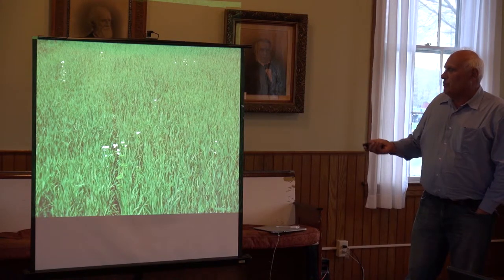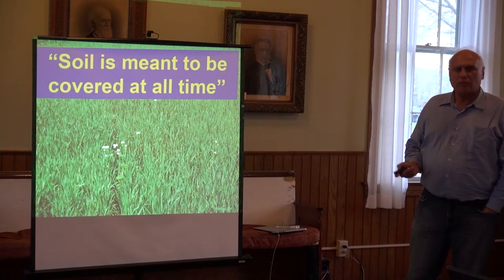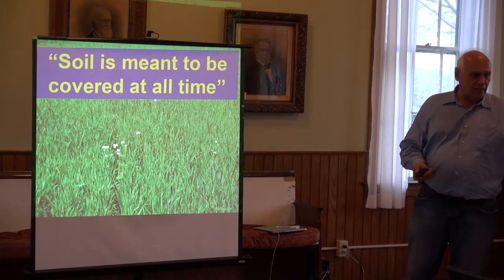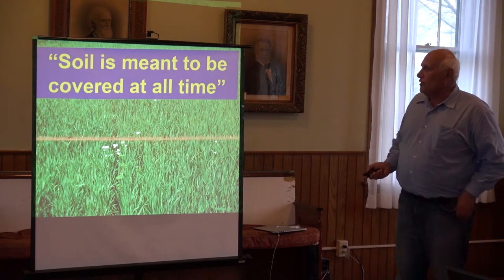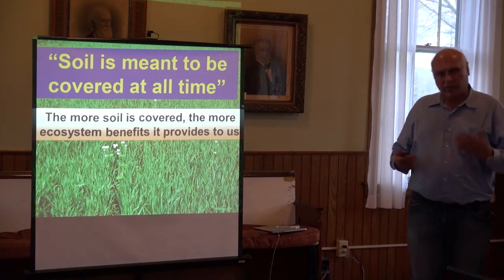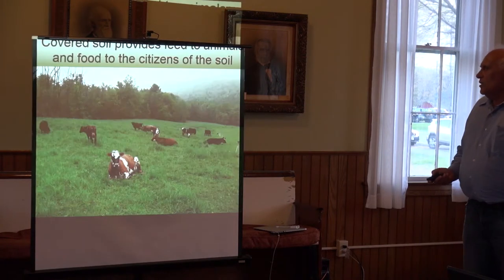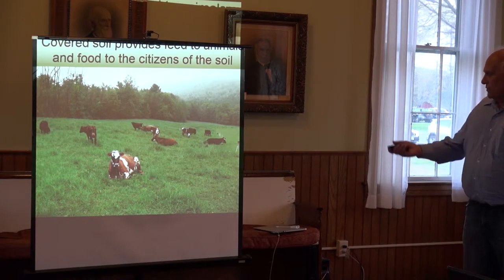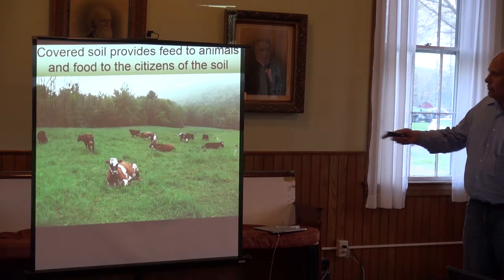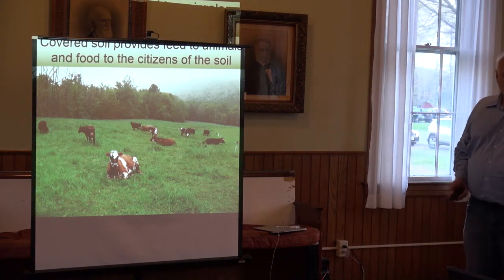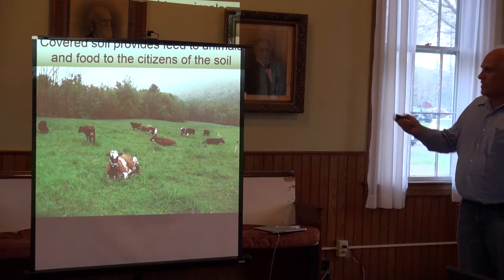In brief, the soil should be covered at all times, with no exception. When we harvest something, we have to plant something — what we call a cover crop — before we plant another crop. Once we have covered soil, that covered soil will provide all kinds of benefits to our ecosystems. That's a very nice picture because the soil is covered with a beautiful pasture, and that cover feeds the cows, but also at the same time — what we don't see — it's feeding microbes more than it feeds the cows. And everybody's happy: neighbors are happy, cows are happy, the owner is happy, customers are happy.